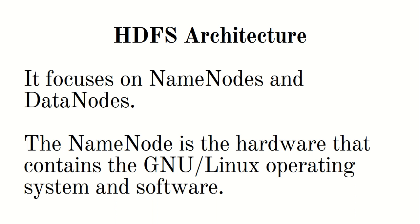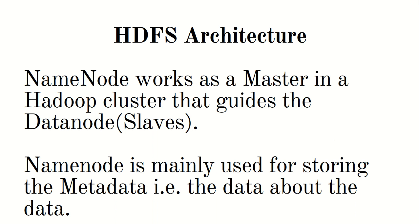What is the name node? It's hardware containing the GNU or Linux operating system and software. In other words, the name node is the basic daemon process of HDFS which acts as a master — it instructs the data nodes. Just like a boss in a company instructs employees to do the work, the name node instructs the data nodes. It acts as master in the Hadoop cluster — a group of machines working together — and guides the data nodes, which are the slaves. The name node is mainly used for storing metadata: data about data, such as file name, file permissions, location across the cluster, and the rack ID where the data is located.